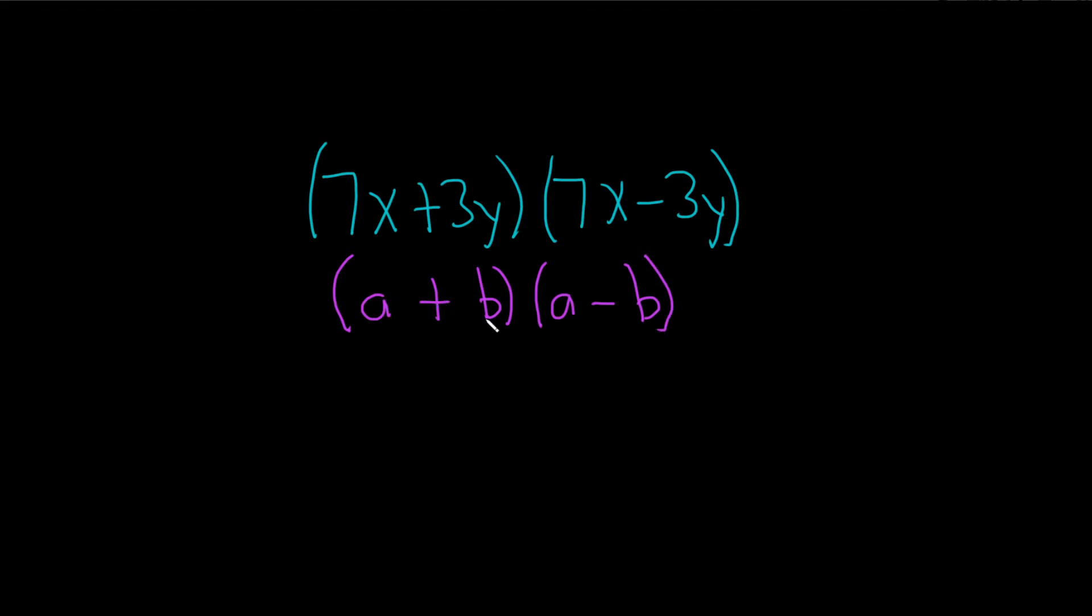So whenever you have a plus b times a minus b, you just get a squared minus b squared.